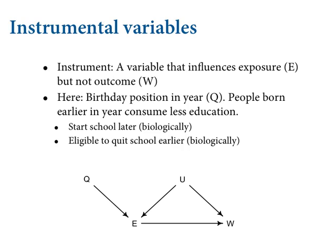If you can get something called an instrument — I've added it here as Q on the graph — there's some hope. An instrument is a variable which affects the exposure of interest but does not affect the outcome. In this example, Q enters into E but does not affect W. Q is the quarter of birth — first, second, third, or fourth quarter of the year. This is a famous example from the economics literature. It's an empirical fact in North America that people born earlier in the year consume less education in their lives than people born later. It's the timing of your birth in the year.